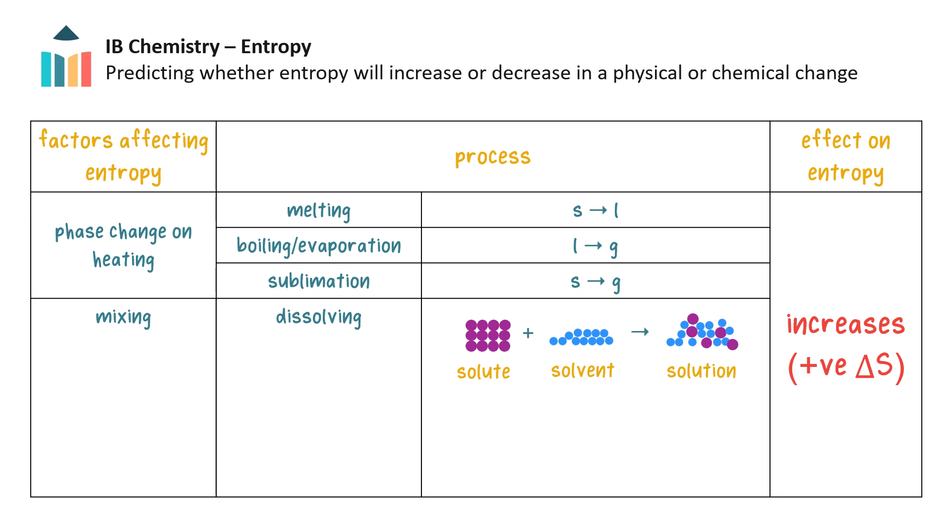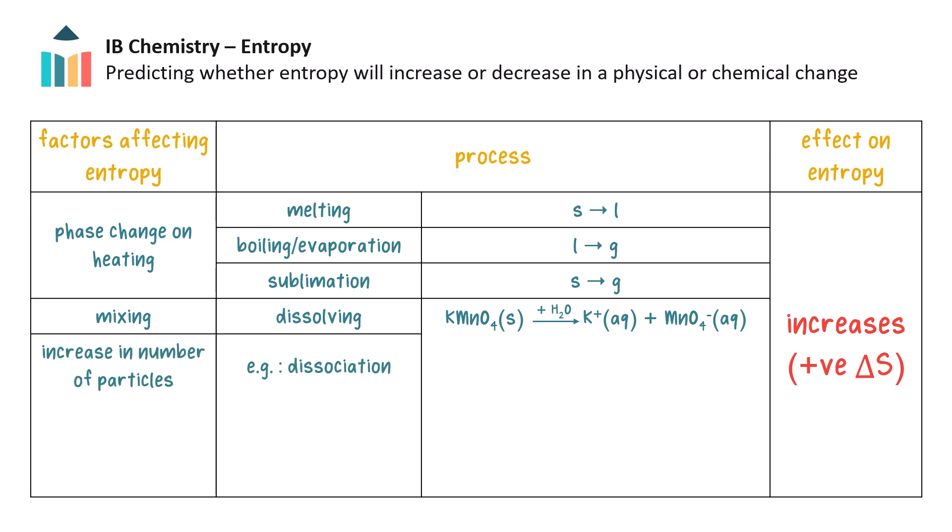Mixing processes, like dissolution, also have an increase in entropy. Solutions have a higher entropy than the pure liquid and pure solid, as the particles of solvent and solute become dispersed. For example, the entropy of an aqueous solution of ions produced when potassium permanganate dissolves in water is greater than that of the solid ionic compound before dissolving. Dissociation, which also occurs in this example, produces more particles and has a net increase in entropy.